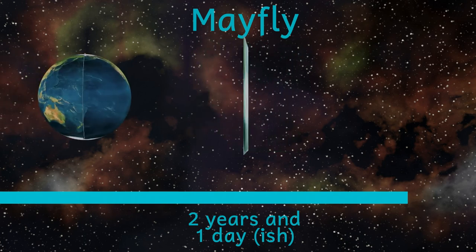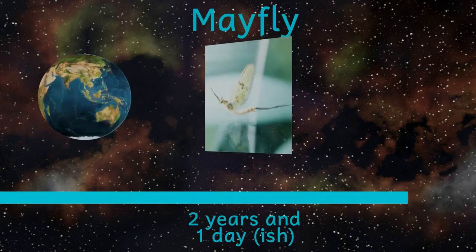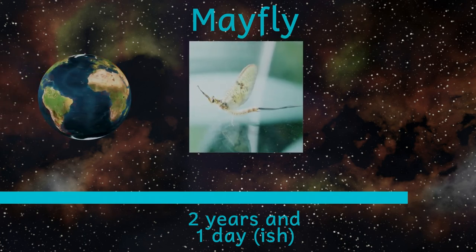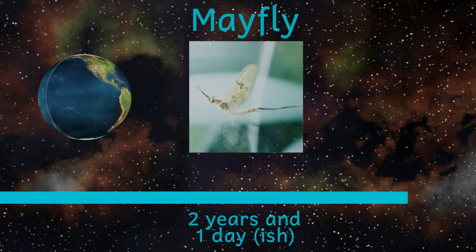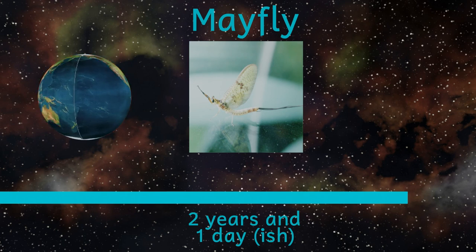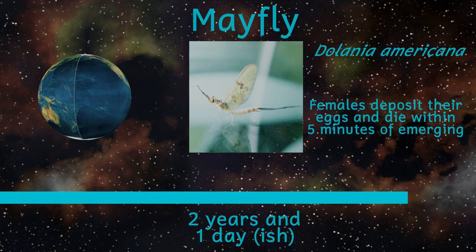There are over 30,000 species of mayfly, inhabiting most of the freshwater of the earth. In fact, so short is the lifespan of the adult mayfly that one species — Deleatidea americana — has adult females that live for less than five minutes.